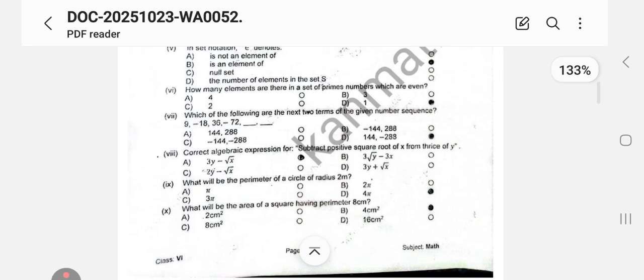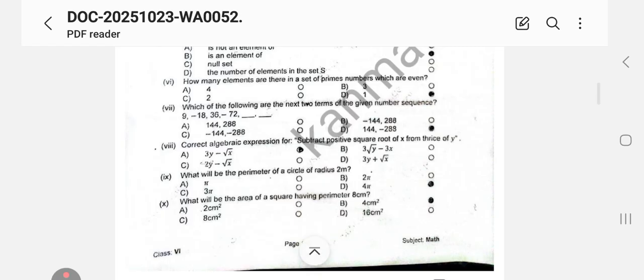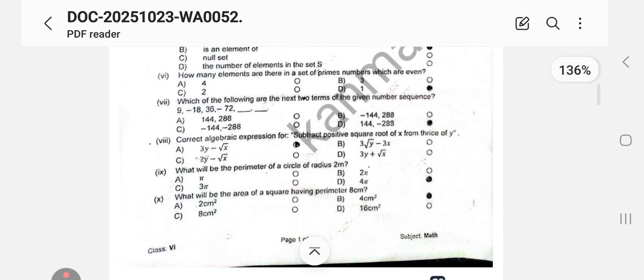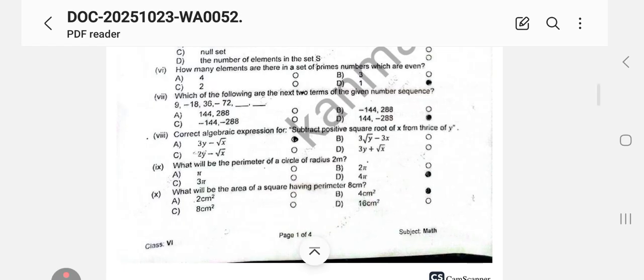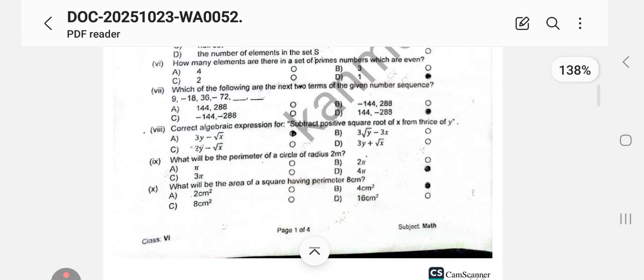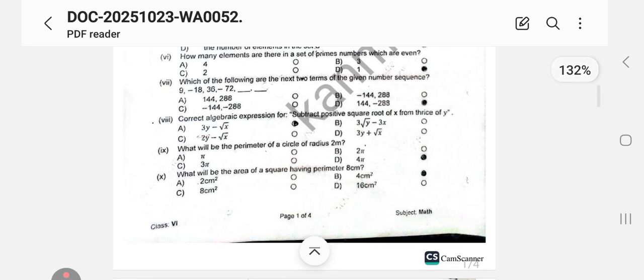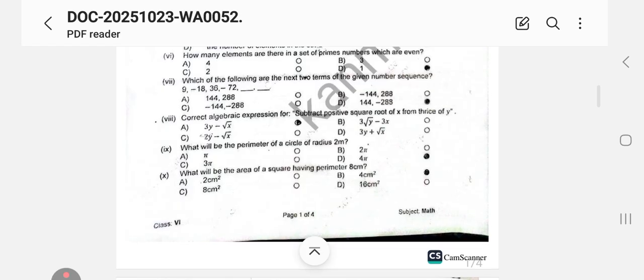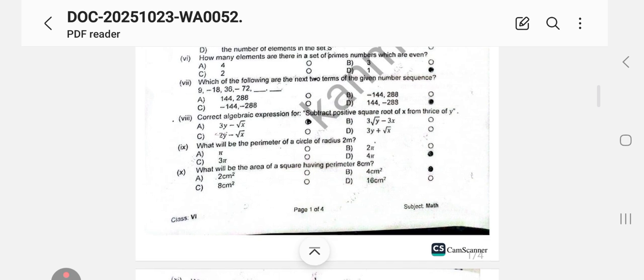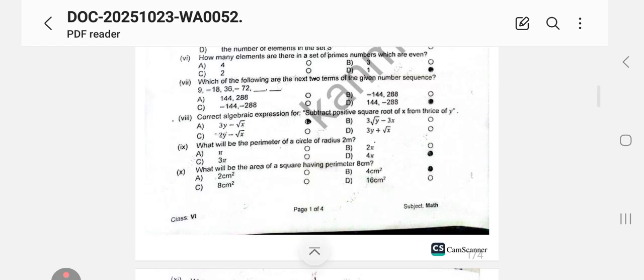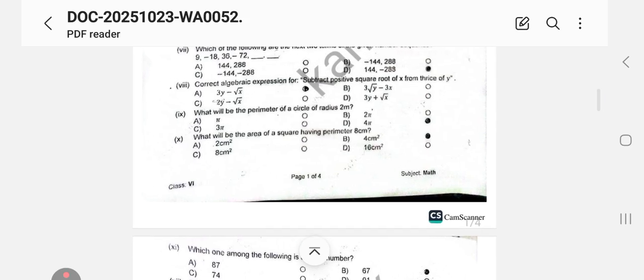Which of the following are the next two terms of the given number sequence? You can check the next few terms. You can see there are alternative signs: 9, minus 18, 36, minus 72. So 9 times minus 2 gives you minus 18, then minus 18 times minus 2 gives you 36. It means you have to times it with minus 2. So minus 72, the next would be positive, that is 144, and the next would be negative, that is minus 288. Correct algebraic expression for: subtract positive square root of x from thrice of y. Positive square root of x means square root x, and you have to subtract it from thrice of y. Thrice of y means 3y, so it will be 3y minus square root x. A option is correct.